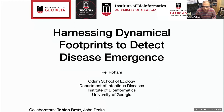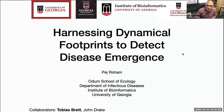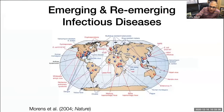Given the predicament that we find ourselves in, it's no surprise to say that understanding emerging infections and re-emerging infectious diseases has assumed great importance in the past year. This is a somewhat old figure depicting the number of emerging infectious diseases in red and a number of re-emerging infectious diseases, predominantly drug-resistant pathogens. As you can see, this is a global issue rather than located to any particular population.